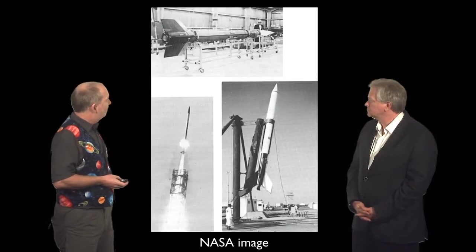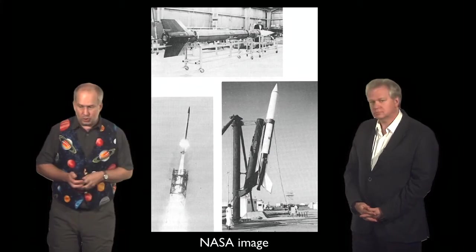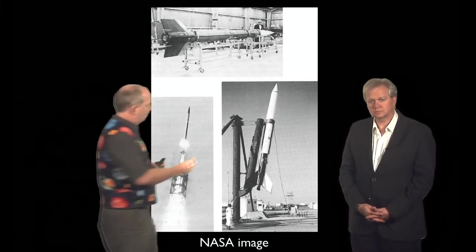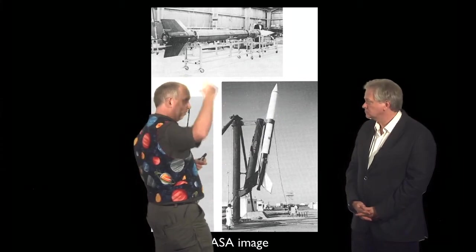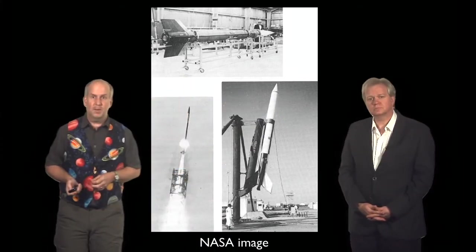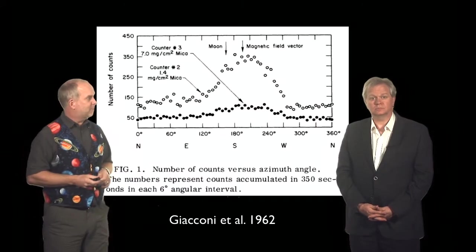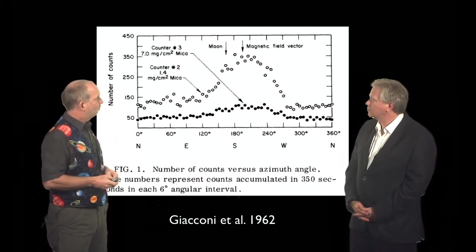They launched it on an Aero B rocket in 1962. They had a port open at the side here, and as the thing would move around, it would survey the sky as it spun around. And sure enough, they picked up a signal, a really strong signal. A really big signal.